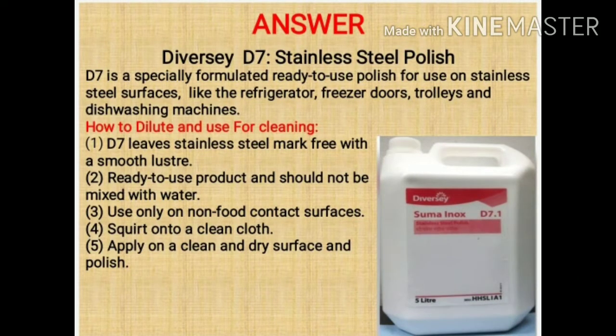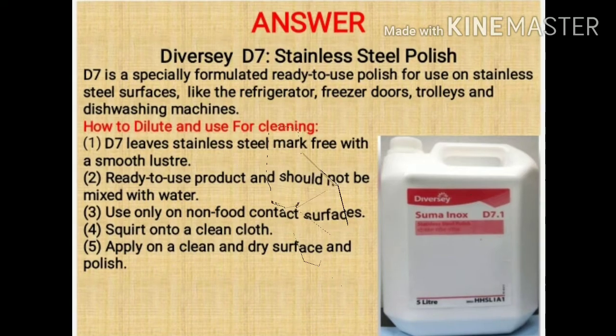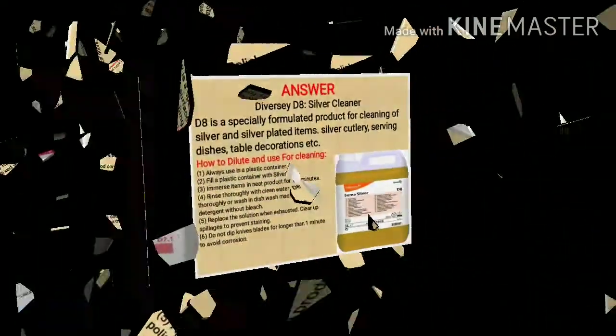Agla chemical hai D7. Isko hum stainless steel ke liye use karte hain — stainless steel ko polish karne ke liye isko use kiya jata hai. Iske alawa hum apne fridge, fridge ka door, trolley, aur dishwashing machine ko bhi saaf karne ke liye iska use kar sakte hain. Iska bhi koi dilution nahi hai, ye ready to use hota hai — bottle mein se nikalo aur use karo.